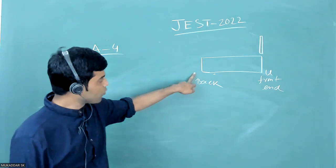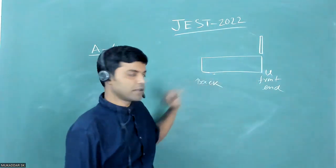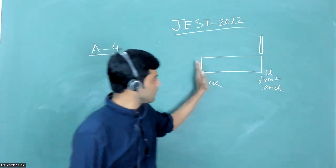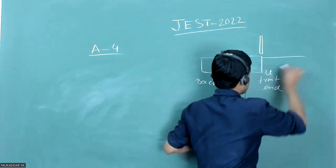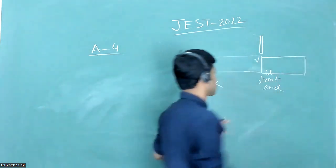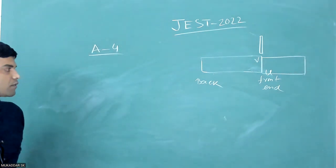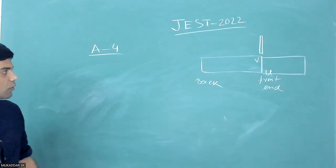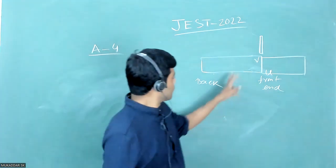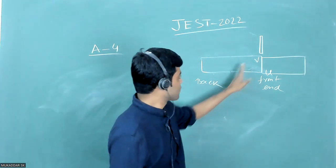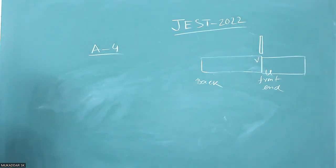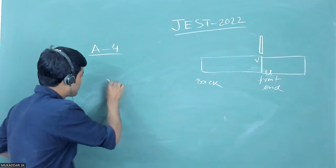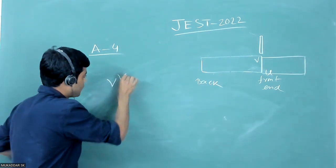The back end is crossing this pole with speed v. The train is moving with constant acceleration. The question is: what will be the speed of the middle part of the train as it is crossing that pole?